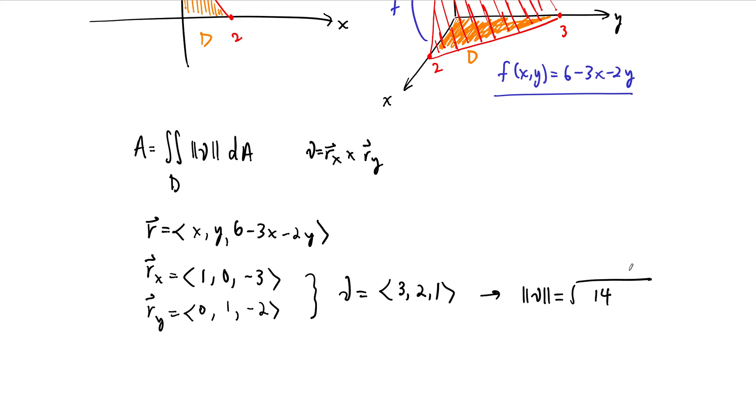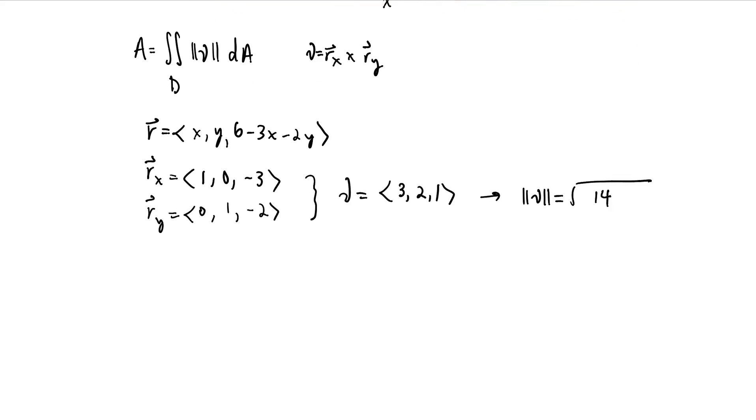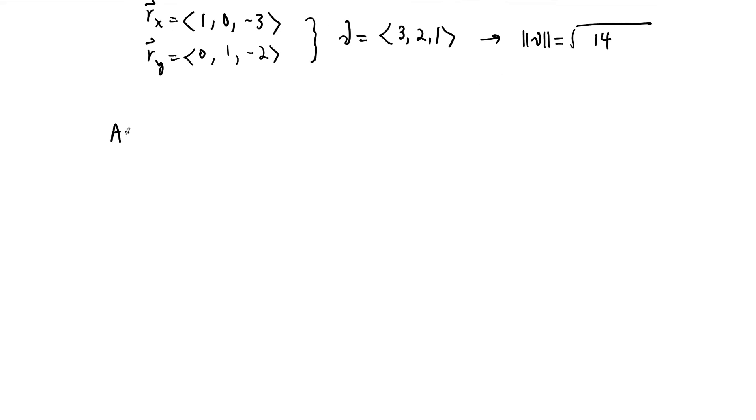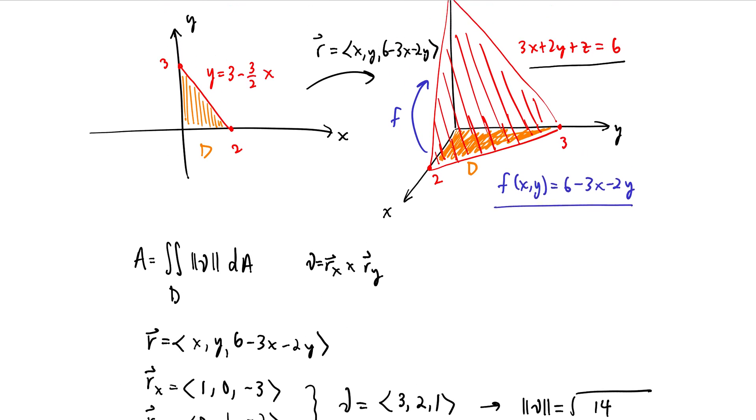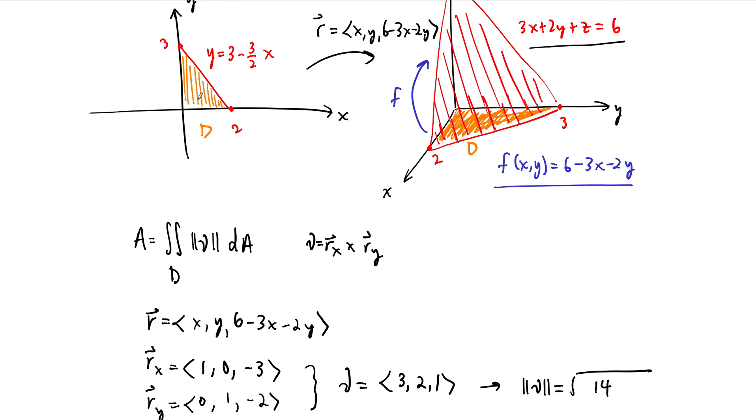All we have to do is integrate up that constant square root of 14 over this domain D. And we will find that the surface area of our surface is equal to the integral from 0 to 2 in the x direction. The y direction goes from 0. We can go back up and look at our domain here. So the y direction is going from 0 up to the curve, so 0 up to 3 minus 3 halves x.